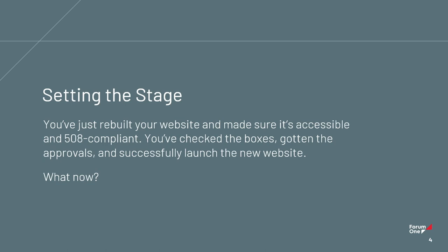This talk has the assumption that you have gone through some kind of rebuild for your website — you've built a website, and during that you thought about accessibility, you programmed those features in so that your website is accessible at launch. But then what? How do you make sure those things that were accessible at launch continue to be accessible later, continue to be 508 compliant, and serve your audiences?